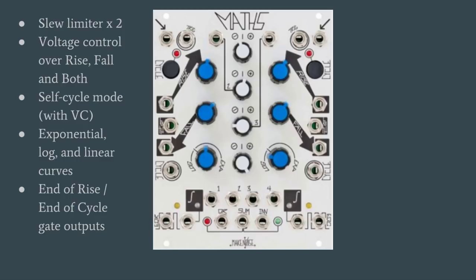A convenience is a both input, which allows you to modify both rise and fall with one control voltage. Next is a self-cycle mode — it will become a looping envelope generator or LFO-type signal. On Maths this is under voltage control, so there's a cycle input near the bottom: if a gate is put into that cycle input, the unit goes into cycle mode, and when the gate goes low it stops cycling. Next is a variable response for the curve — exponential, logarithmic, or linear. Then very importantly are the end-of-rise or end-of-cycle gate outputs: on channel one, when the rise portion completes and the signal starts to descend, it puts out a gate; on channel four, when the cycle is done, it puts out another gate. These are very important for some of the classic Maths patches.